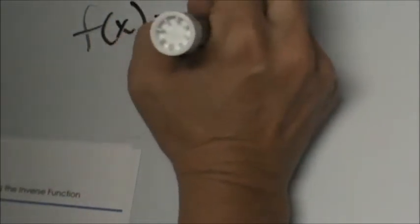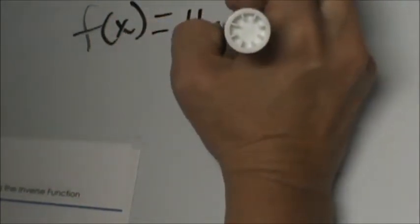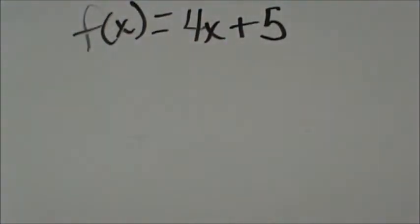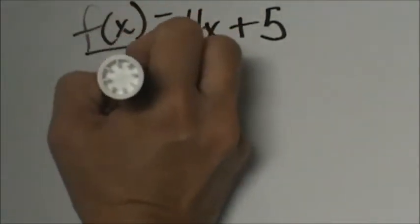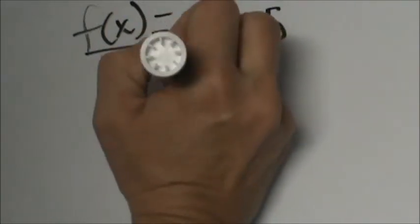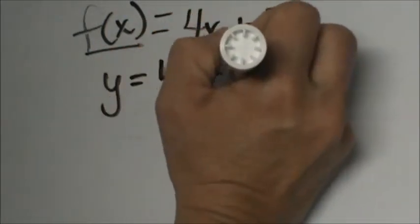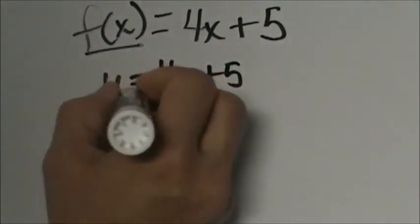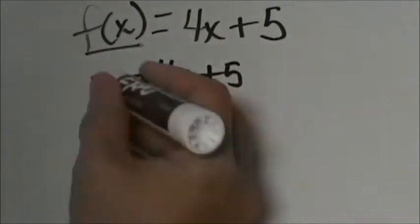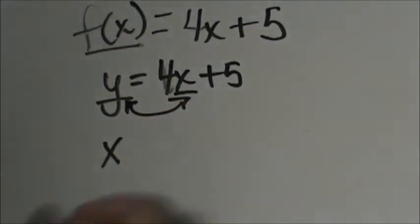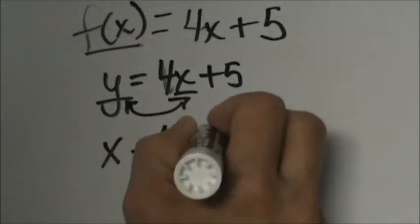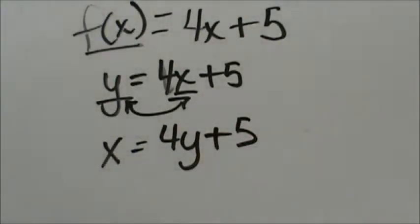f(x) is equal to 4x plus 5. That is our original equation. Now what we're going to do is replace f(x) with y, taking it out of function notation and back to traditional x and y values. Now I'm going to switch my x and my y positions with the variables, so x will be where the y is and y will be where the x is.